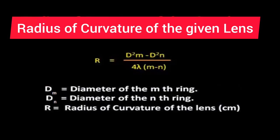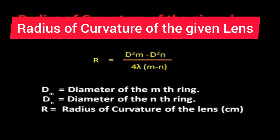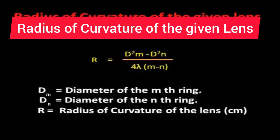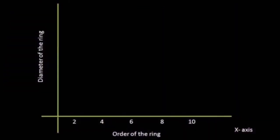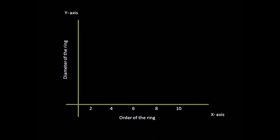With the help of this formula we can find out the radius of curvature of the given lens. And graphically also we can find out, x-axis, y-axis, plotting ring number. Here is the graph, a linear line.